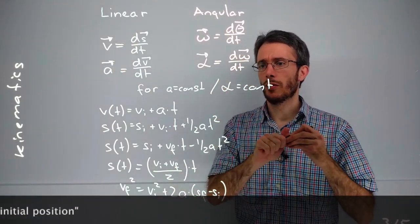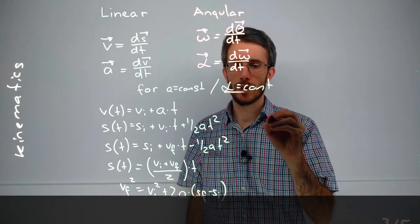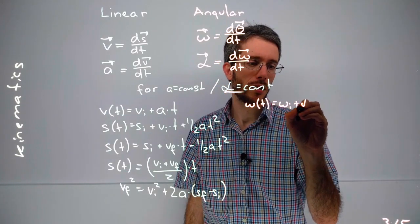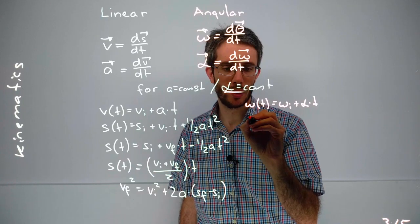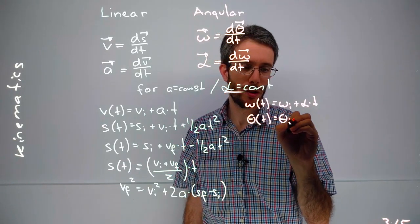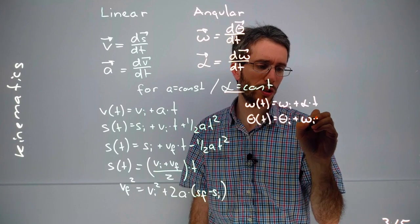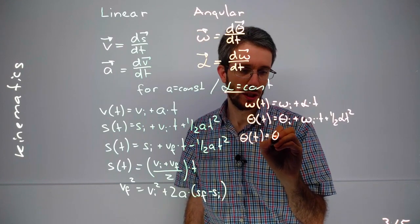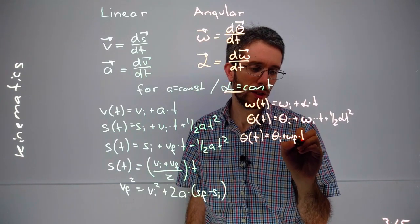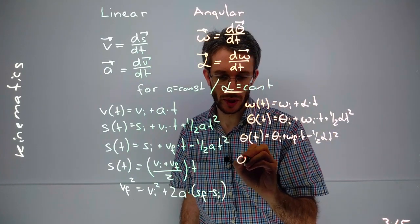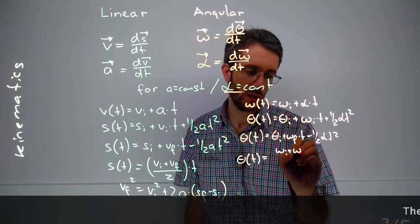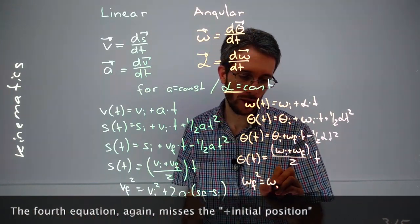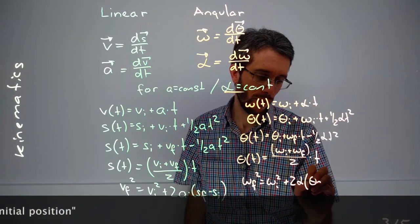And then we have the exact same thing for the angular case. If alpha is constant, we have omega as a function of time is omega initial plus acceleration times time. We have position as a function of time is omega initial plus theta negative times time plus one-half alpha t squared. Then we had the angle as a function of time could also be theta negative plus omega final times time minus one-half alpha t squared. Then we have position as a function of time is the average angle velocity, and we had omega final squared is omega initial squared plus 2 alpha theta final minus theta initial.